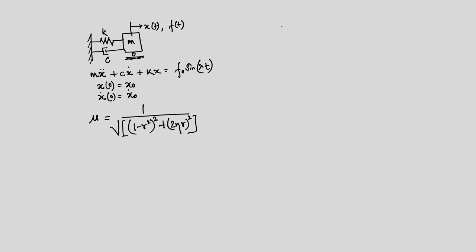Recall the nature of this dynamic amplification: on the x-axis we have r, the frequency ratio, which is λ divided by ωn. Here λ is the driving frequency and ωn is the natural frequency of the system. On the y-axis we have the dynamic amplification. We define resonance when r equals 1, meaning the driving frequency matches the natural frequency of the system.